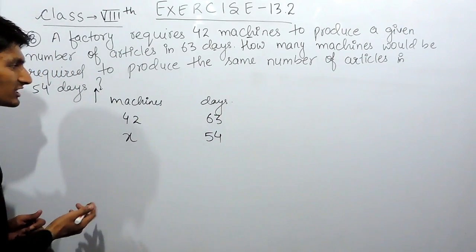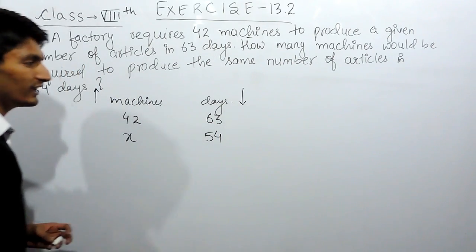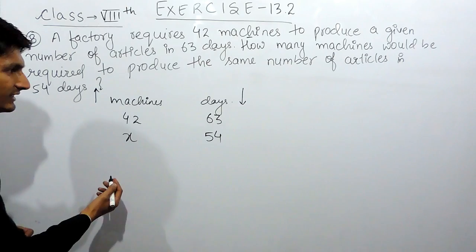So obviously, this is inverse proportion. When machines are more, the number of days are less. So this is our indirect proportion.